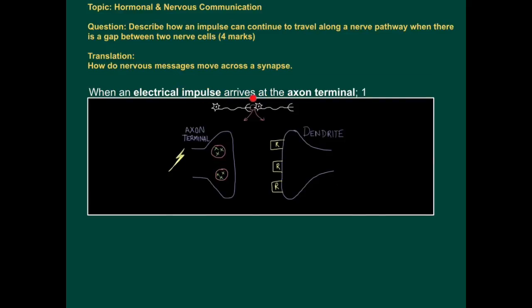So firstly, an electrical impulse has to arrive at the axon terminal, the end of a nerve cell at this point here and you can see that happening here.